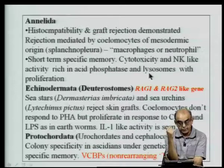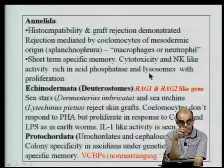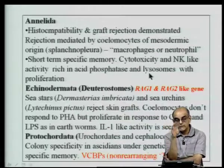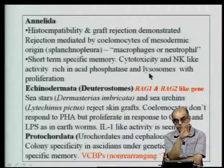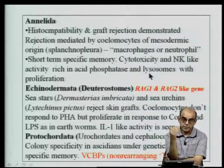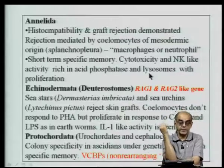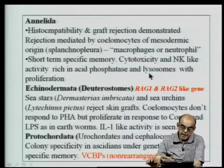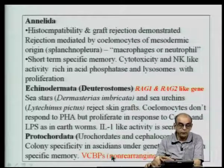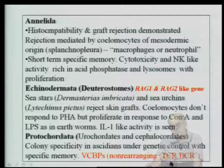Protochordates, urochordates, and cephalochordates have colony specificity, like the ascidians. These colony specificity or rejection reactions at this point in evolution appear to be under genetic control — perhaps the first evidence where MHC-like molecules may be playing a role. There are also chitin-binding proteins, which are the early forerunners for the non-rearranging T cell receptor or B cell receptors.